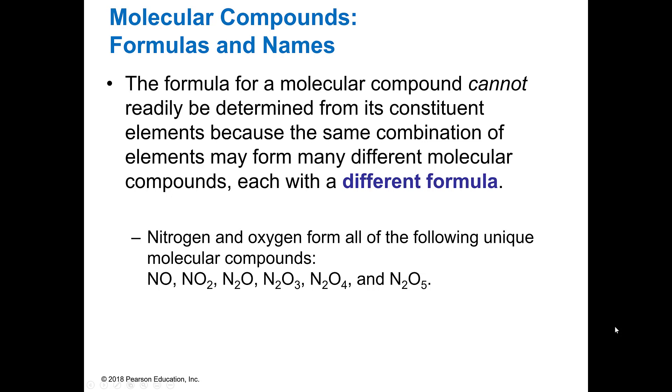The formula for a molecular compound cannot be readily determined from its elements, because the same combination of those elements could have different molecular compounds. So remember when we were talking about empirical formula versus molecular formula, things can have the same empirical formula, but different molecular formulas. And even between nitrogen and oxygen, you can have lots of different combinations in covalent compounds, because they're not completely just using charges.